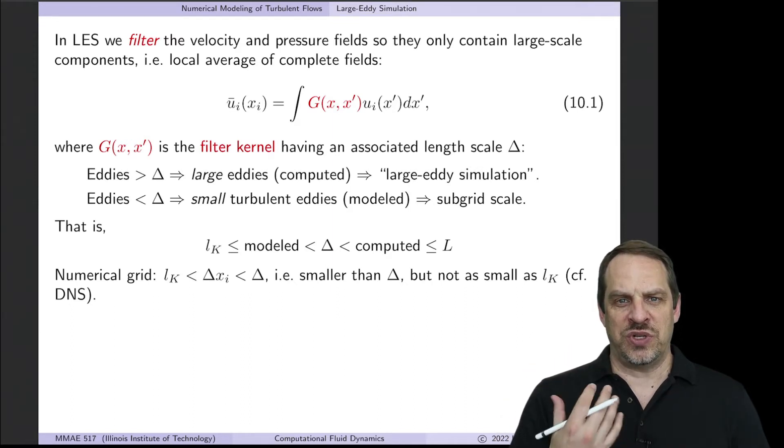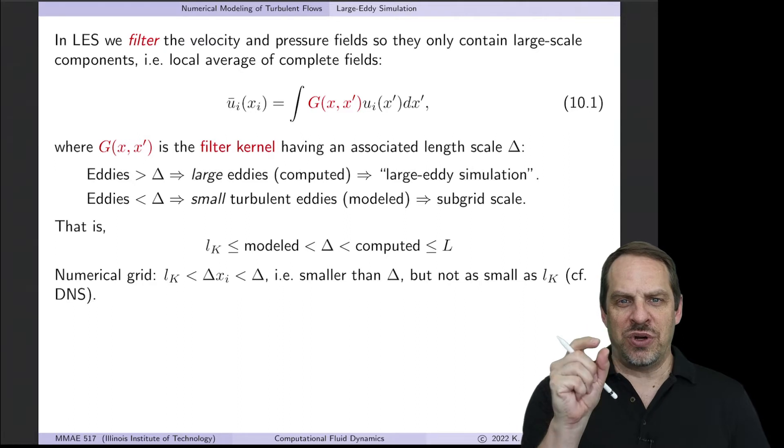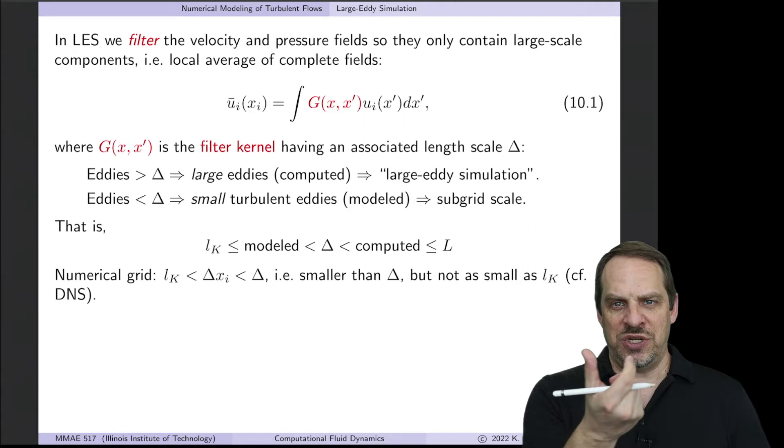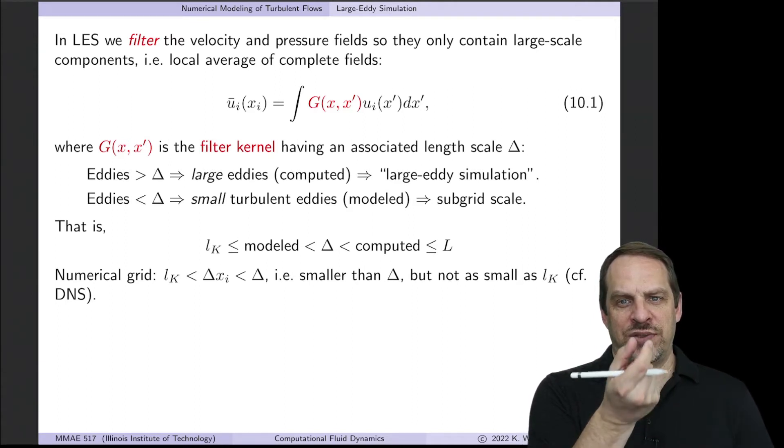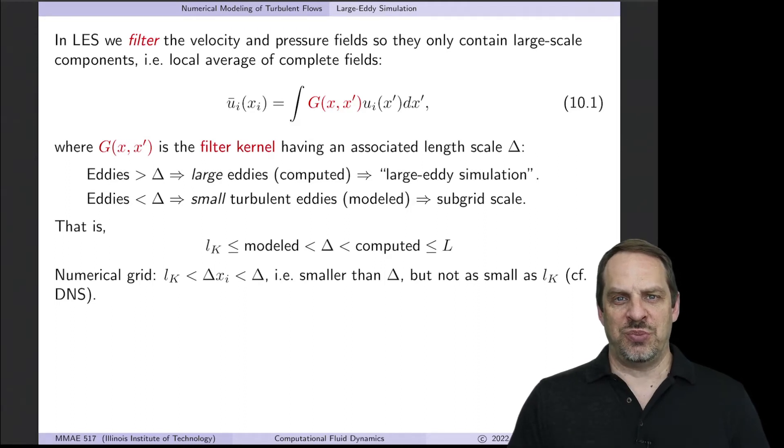How does this help us relative to DNS? In DNS, we had the Kolmogorov scale L_K, the size of the smallest eddies in turbulent flow. With DNS, we need to resolve those small scales, requiring many grid points across L_K to sufficiently resolve small eddies.